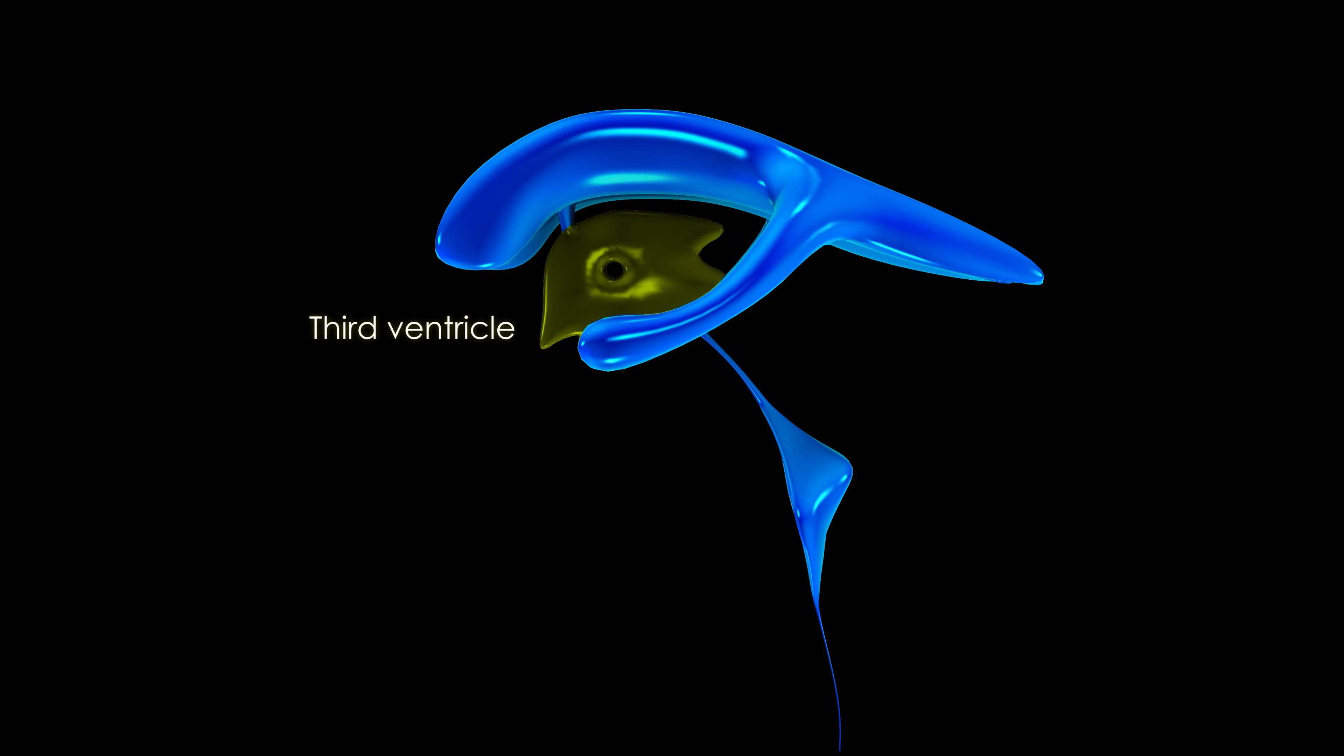The third ventricle is connected to the fourth ventricle in the brainstem by the aqueduct of Silvius.